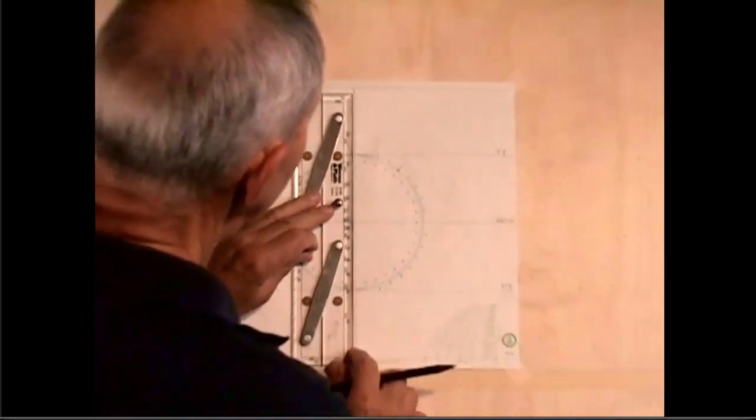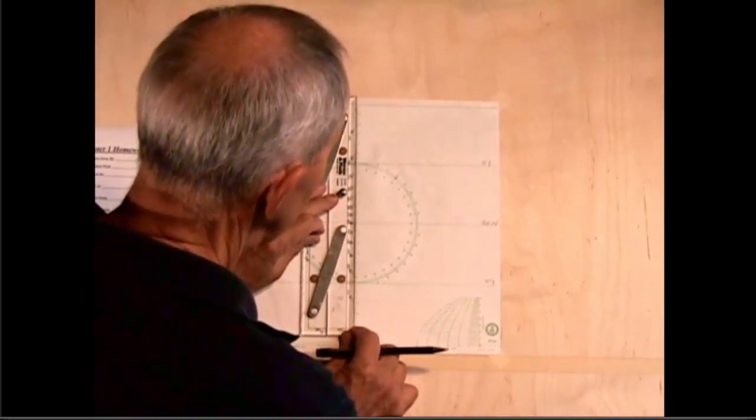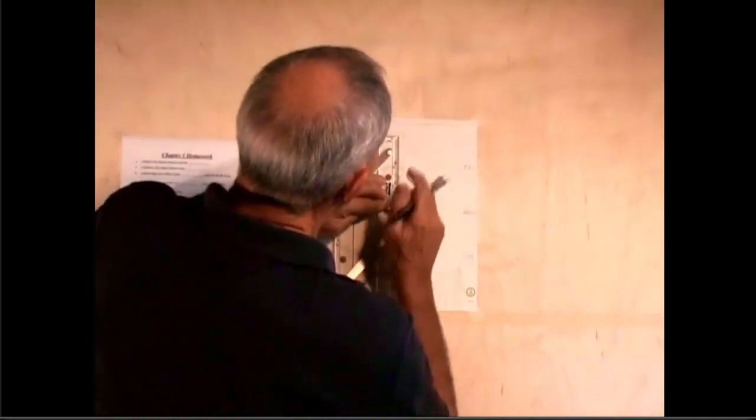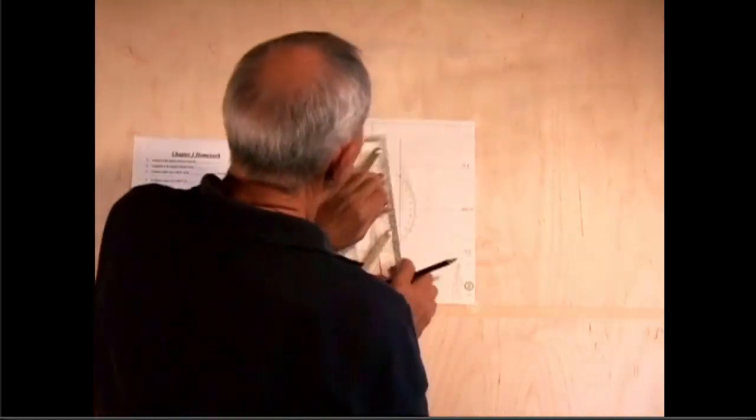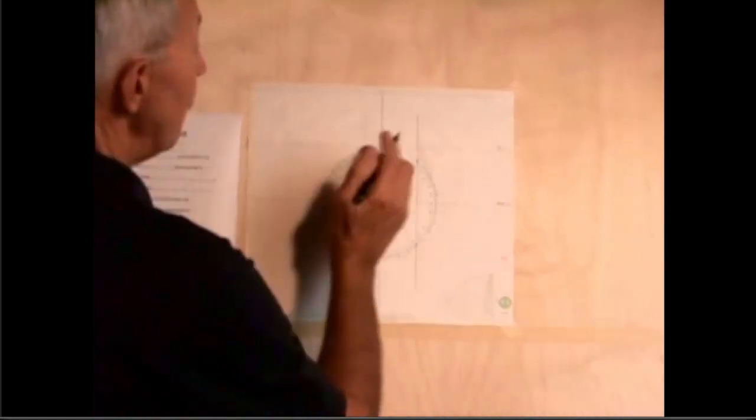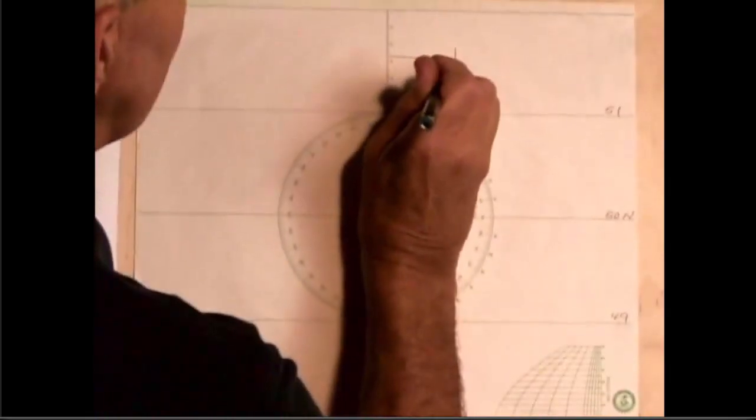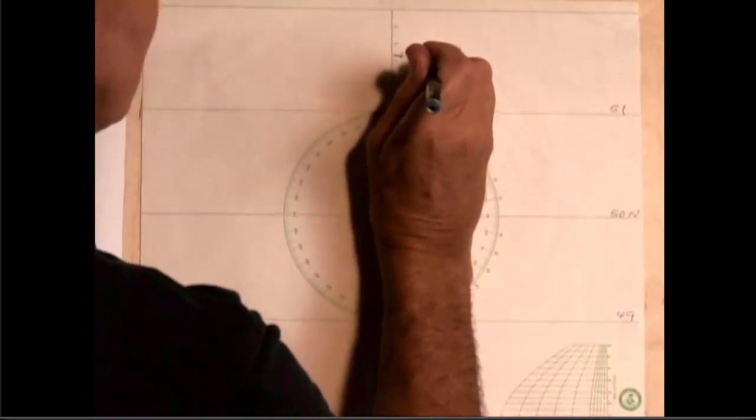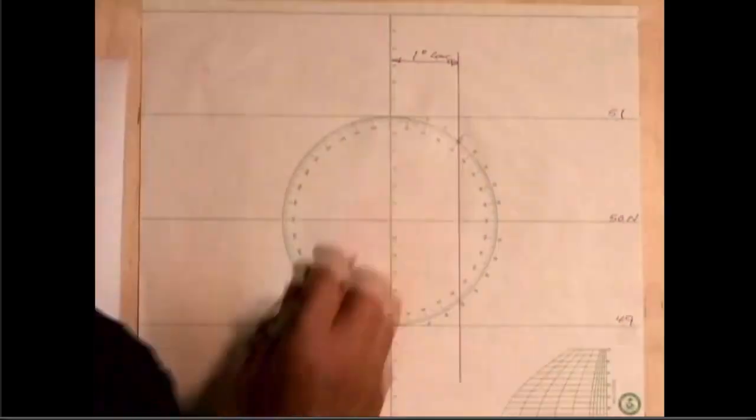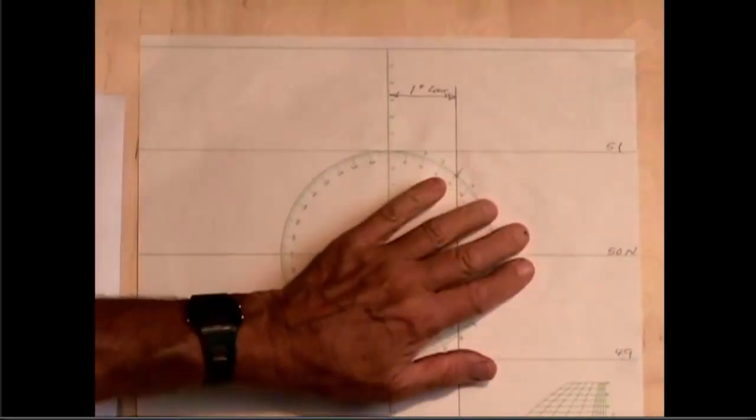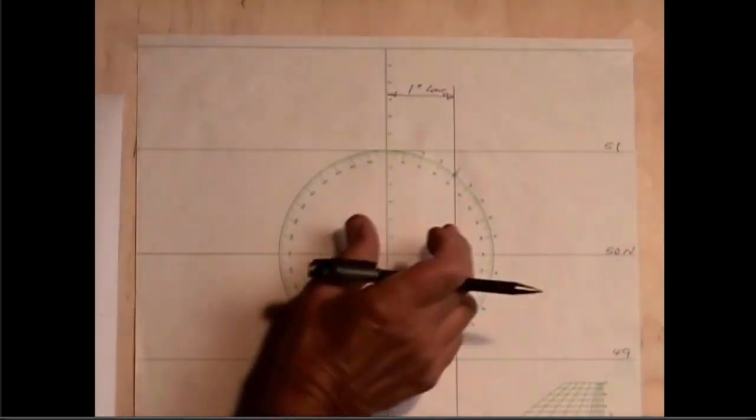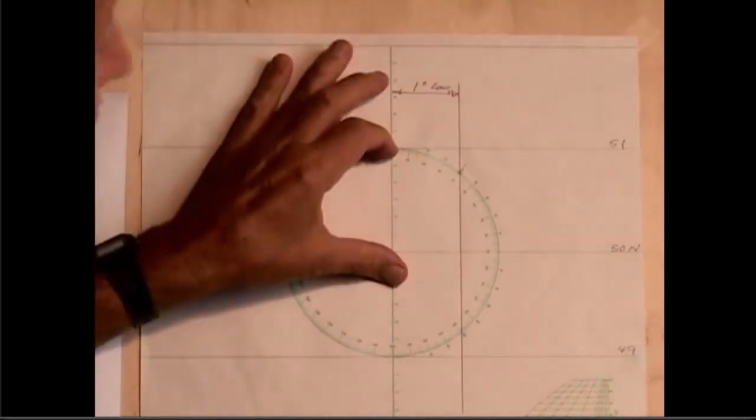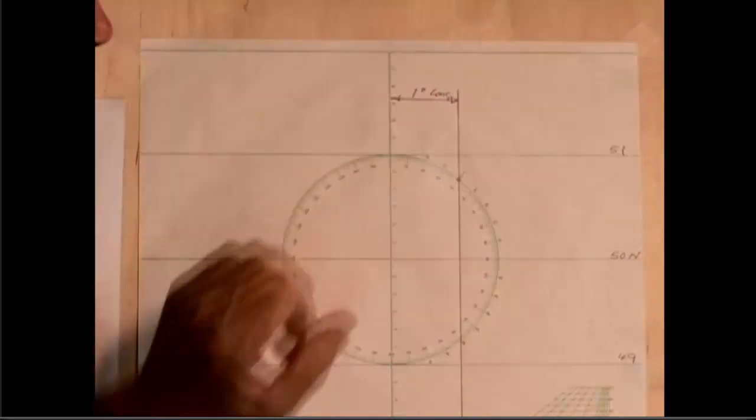So I'm going to take my parallel rules and draw a vertical line through that point that I just made. And this distance here represents one degree of longitude for this latitude of 50 degrees north. So these are now the proportions of a one degree by one degree rectangle for 50 degrees north.